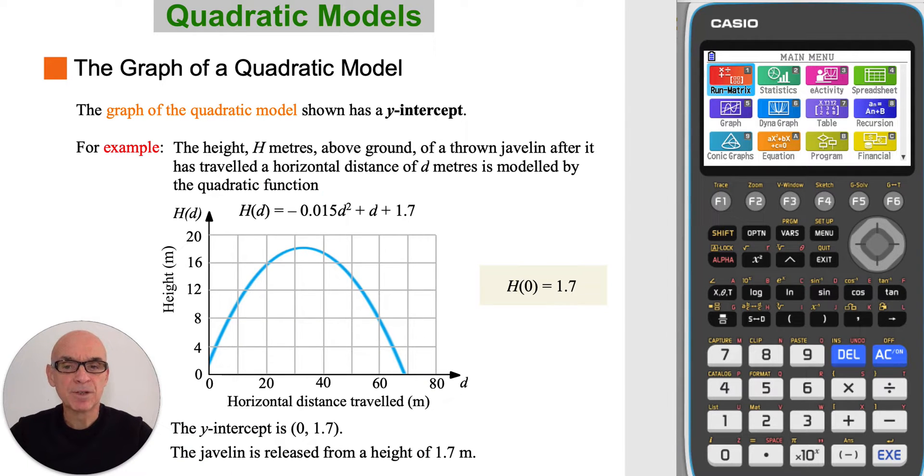In this example, the height h above ground of a thrown javelin after it has traveled a horizontal distance of d meters is modeled by the quadratic function given.